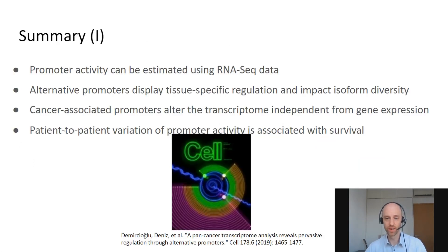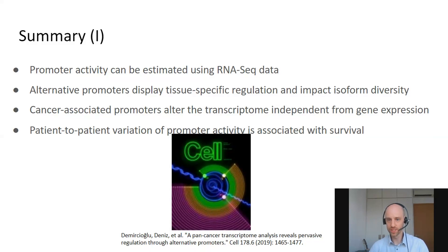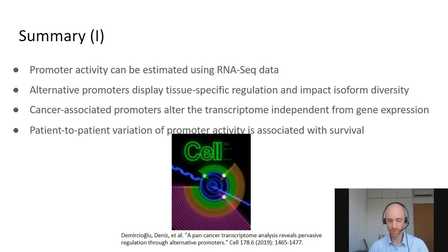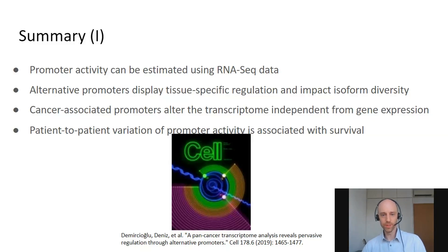To summarize the first part: I've shown that we can estimate promoter activity from RNA sequencing data. We see that alternative promoters display specific regulation and impact isoform diversity. We studied cancer-associated promoters, and often these are independent from gene expression — so we would easily miss them if we only looked at gene expression. The association of promoter activity with survival shows that some promoters might be predictive, and this association is specific to the promoter and not at the gene expression level. This paper has been published, so you can read about it and also try the tool. One limitation is that this is specific to annotations — we rely on annotations of promoters to estimate them.